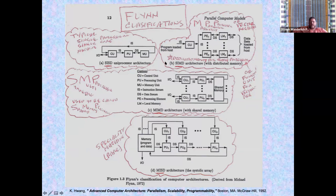We have SISD, MIMD, and MISD — the systolic array — though I've yet to see anybody actually make a working system like that. It exists because of the combinations of single or multiple instruction with single or multiple data — two binary choices yielding four combinations. MISD is really just there for the sake of completeness.